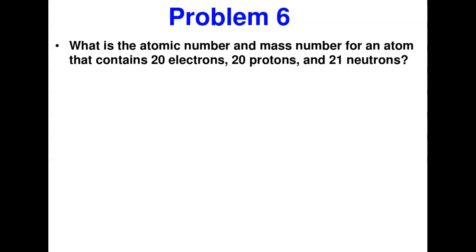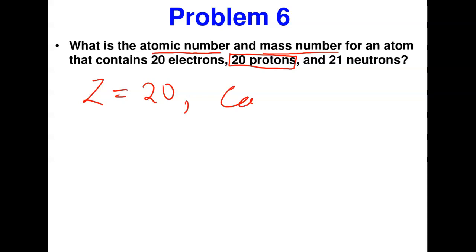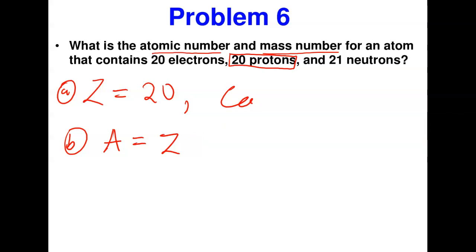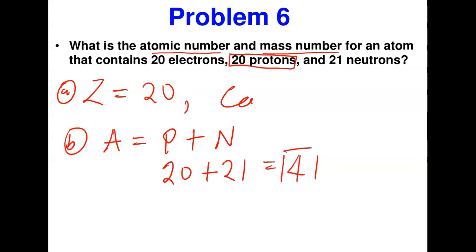What is the atomic number and mass number for an atom that contains 20 electrons, 20 protons, and 21 neutrons? The atomic number Z equals 20 — that element is calcium. The mass number A equals the number of protons plus the number of neutrons: 20 + 21 = 41. So calcium here has an atomic number of 20 and an atomic mass of 41.